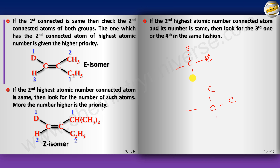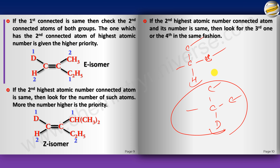If two groups are identical all the way to a certain level but one has a D (deuterium) and the other an H at that level, D gets higher priority due to greater atomic mass. So that group containing D gets priority 1 over the group with H.